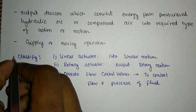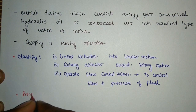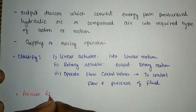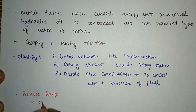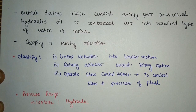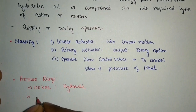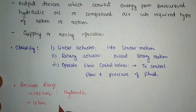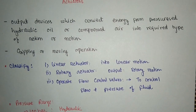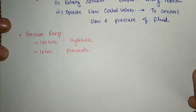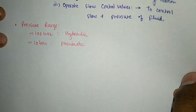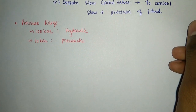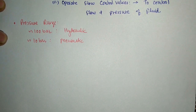A hydraulic actuator is basically used for a pressure range of roughly 100 bars. But if we are limiting our operations to 10 bar, then a pneumatic actuator can also be used to attain 10 bar. That is the basic difference between the application of a hydraulic and a pneumatic actuator - the rest of the construction and application is similar.